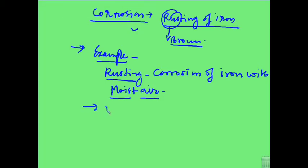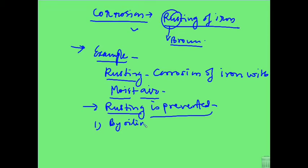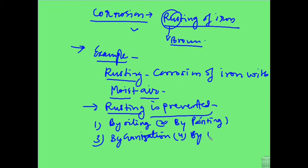How is rusting prevented? We can prevent it: Number one, by oiling iron articles. Number two, by painting. Or by galvanization where zinc is coated over iron. Or by using anti-rust solution. These are some steps we take to prevent rusting.